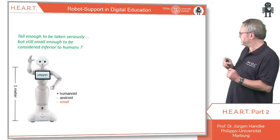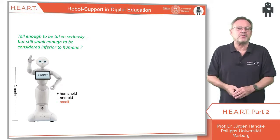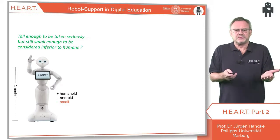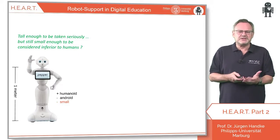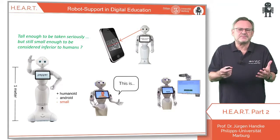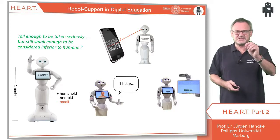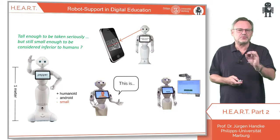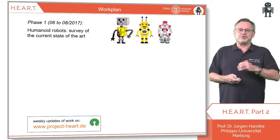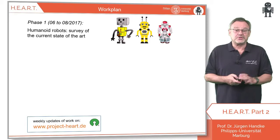The idea is that robots can help and assist just like human coaches. We assume that our robot Pepper has just the right size and the required capabilities to do exactly that. But in order to become an assistant in class, Pepper needs a number of apps that he can perform on request. That's exactly the goal of HEART — Humanoid Emotional Assistant Robots in Teaching.